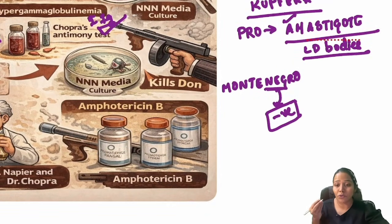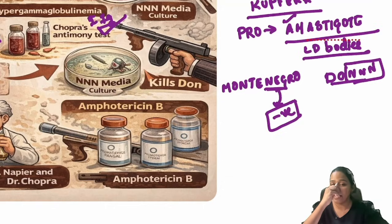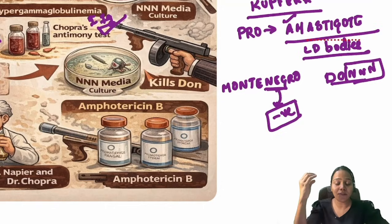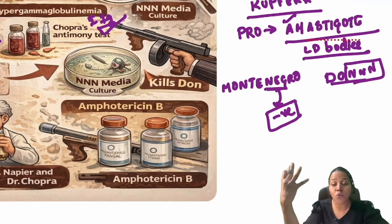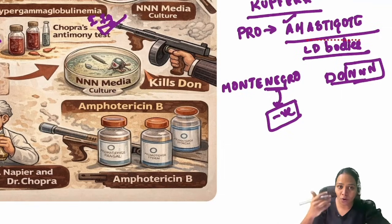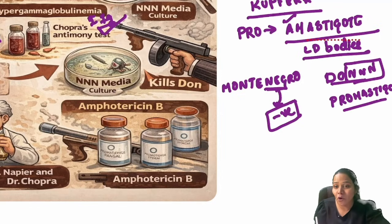To confirm with culture, the doctors use NNN (Triple N) media — remember: 'don' ends with N, so add two more N's to get Triple N. In culture, Leishmania donovani shows its true form, which is promastigote. So both the infective form and the culture form are promastigote.